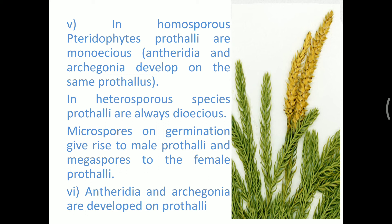In homosporous pteridophytes, prothalli are monoecious — meaning both antheridia and archegonia may be present, and the archegonia develop into the new sporophytic plant body. In heterosporous species, prothalli may be dioecious — microspores on germination give rise to male prothalli, and megaspores give rise to female prothalli. Antheridia and archegonia develop on these prothalli themselves.